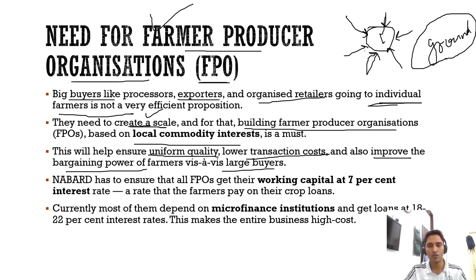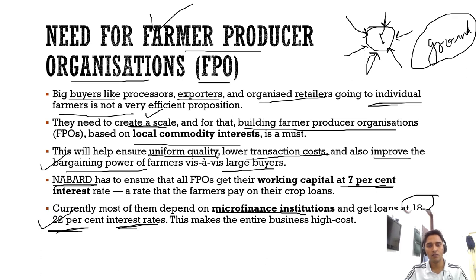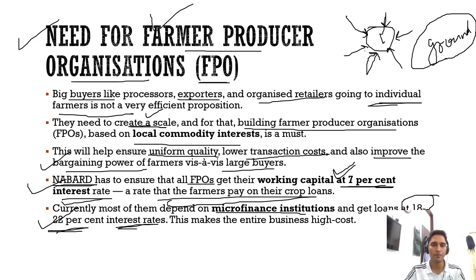Individual farmers do not enjoy much bargaining power, but once united in an organization they gain more. The government has also emphasized formation of FPOs in earlier budgets. Currently, FPOs are getting loans from micro-finance institutions at very high interest rates — around 18% to 22%. At present, individual farmers get loans at 7%, and NABARD should provide loans to FPOs at this same rate to help overall farmers.